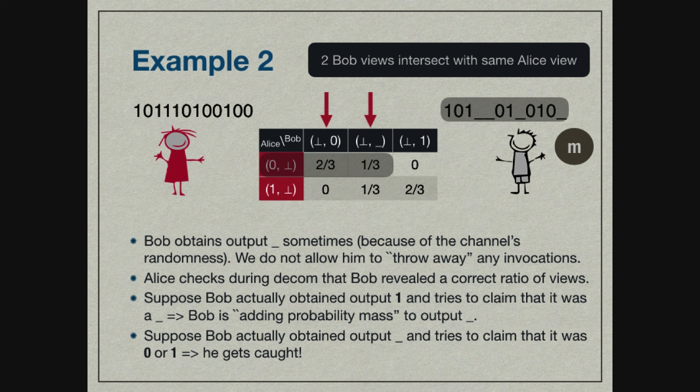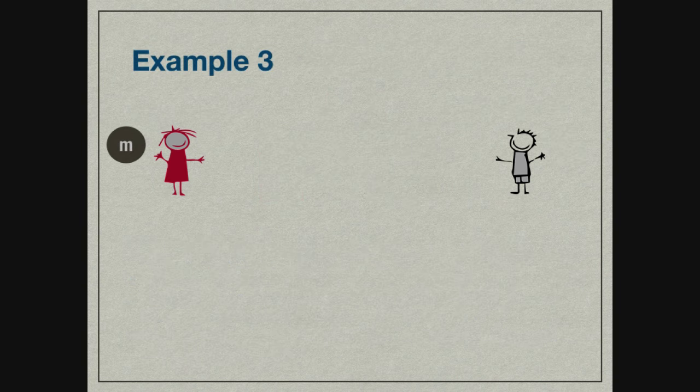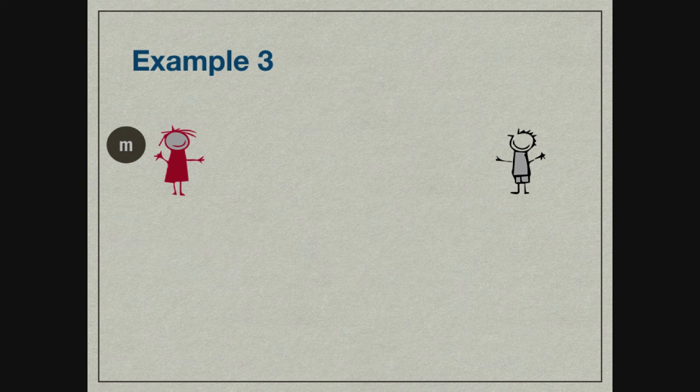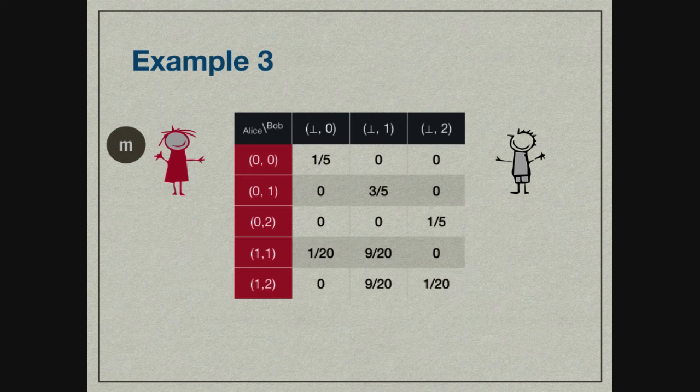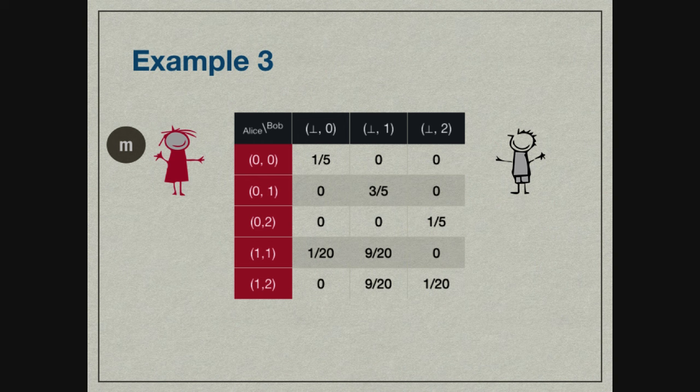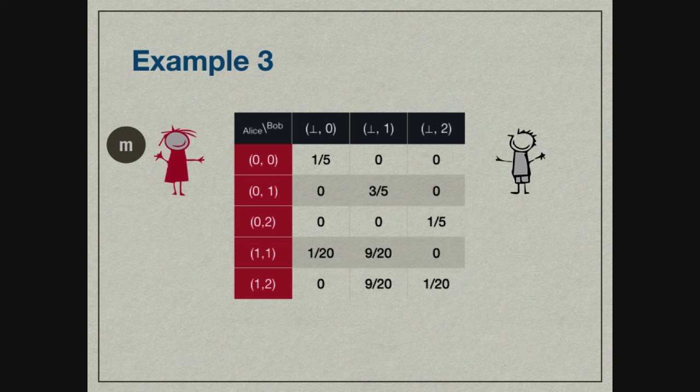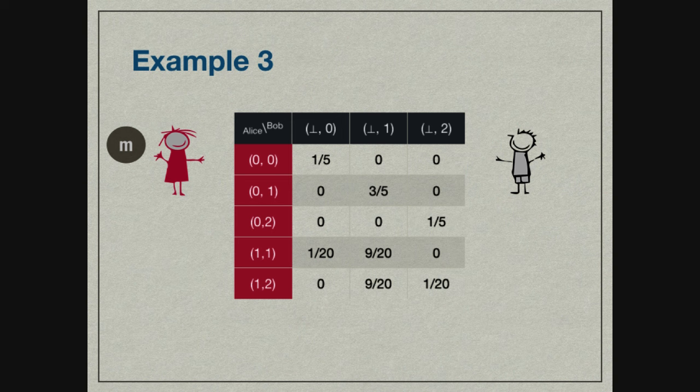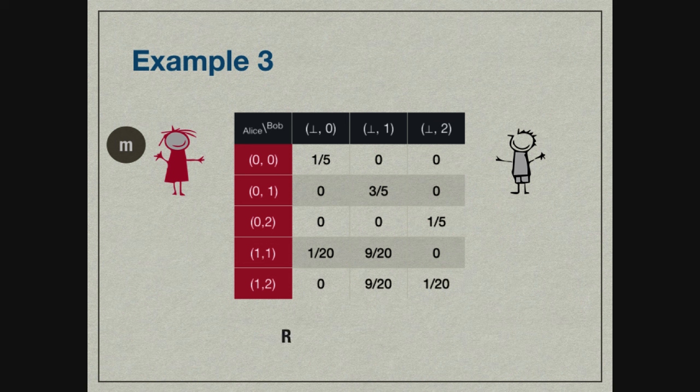It turns out there are many more issues here. For example, in this easy example, Bob does not have any inputs, so he had no control over what views he obtained. But if Bob did have an input, there will be more complications, which we handle in the paper. There's another more sophisticated example scenario which has more problems and needs an entirely different kind of protocol to handle. In the paper, we show there are basically three main cases into which functionalities can fall, and for each of these cases, we devised protocols. Please refer to our paper for these more detailed protocols.